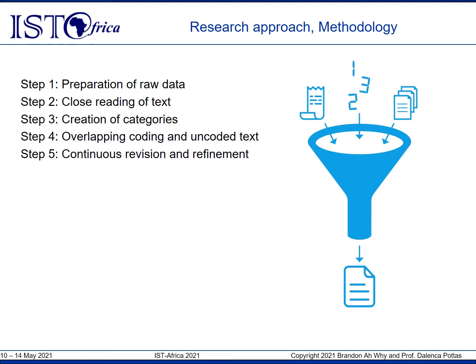A five-step plan was followed to analyse the gathered literature and identify best practices for health insurance members. Step 1 involved the identification of literature sources related to the objective. In Step 2, the researcher familiarised himself with the text through close reading of 20 sources and identified 45 measures. In Step 3, the researcher analysed the 45 measures and six categories were created. Redundant best practices were removed in Step 4, and in Step 5, new insight led to the revision and refinement of the six best practices categories.